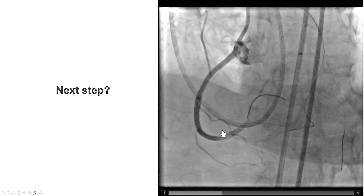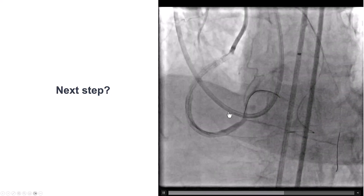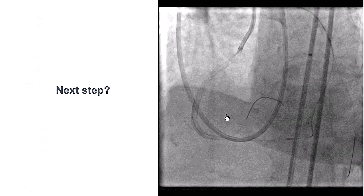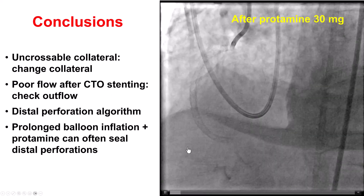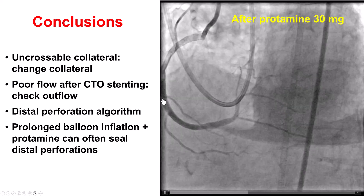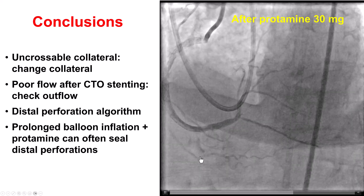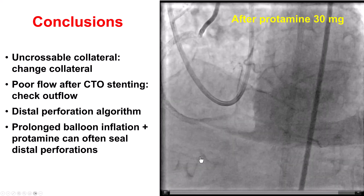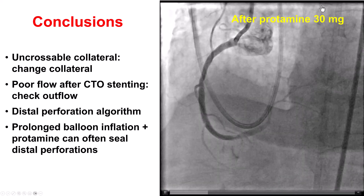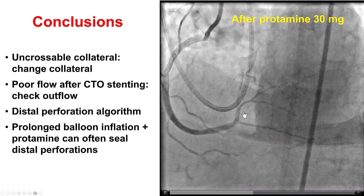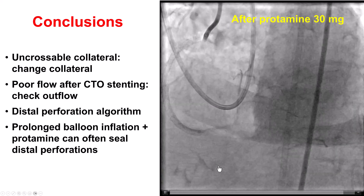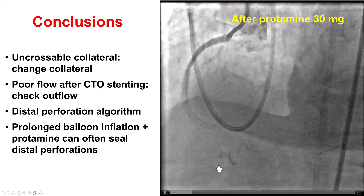We decided to proceed with reversal. To do so, we first removed the equipment from the vessel — the wire and the balloons. We gave 30 milligrams of protamine, and we achieved nice hemostasis without continued extravasation into the vessel.